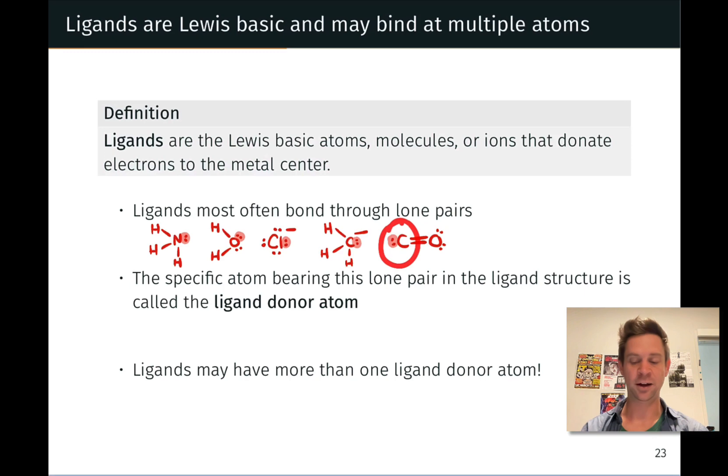And carbon monoxide, whose carbon has a lone pair that can be donated to the metal center. Carbon monoxide, like cyanide, can also be envisioned as binding through its oxygen, although oxygen being more electronegative is less inclined to serve as a Lewis base than carbon.